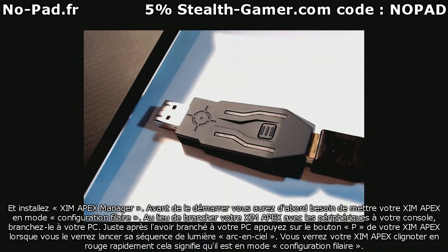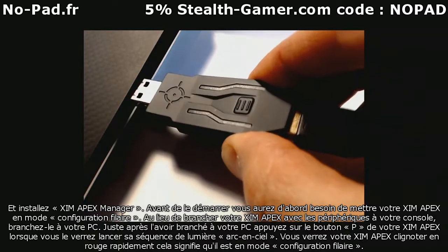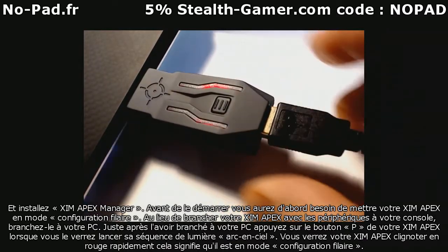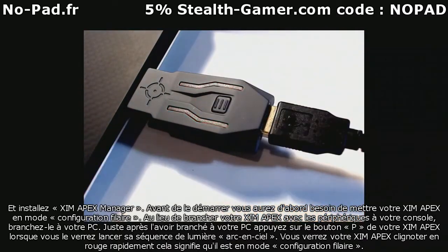Instead of plugging your Zim Apex with peripherals into your console, you will instead plug it into your PC. Right after you plug into your PC, press Zim Apex's button while you see its startup rainbow sequence. You will see your Zim Apex flash red rapidly, which means it went into wired configuration mode.